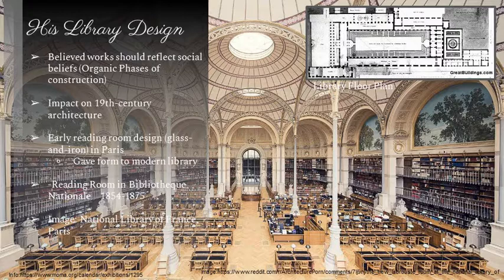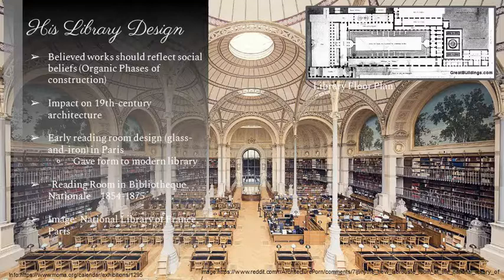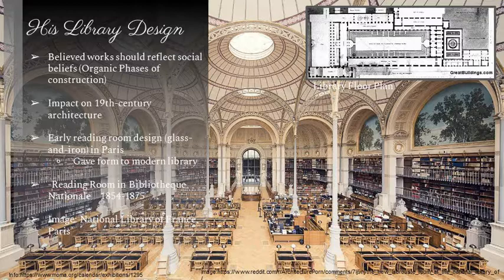For the National Library in Paris, he only designed the reading room. This work reflected social beliefs in that it featured very organic forms — not that the building itself was organic, but that each individual building phase was visible in the end product, which was different for that time period. That's why he left a significant impact on 19th century architecture. You can see in his arch designs and domes that he let in a lot of natural light for readers, bringing it further into the facility.